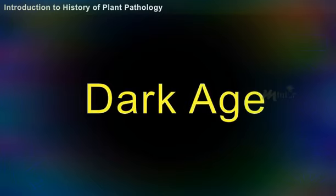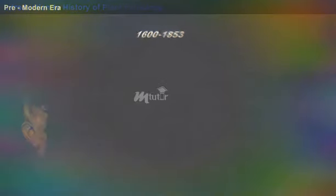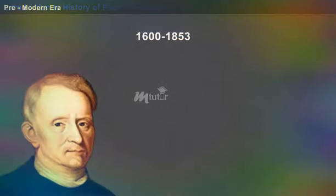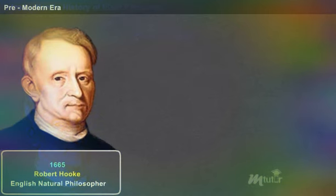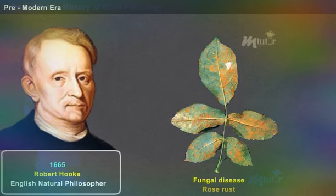Let us now discuss the history of plant pathology in different eras. In 1665, Robert Hooke, an English natural philosopher, illustrated a fungal disease — rose rust.